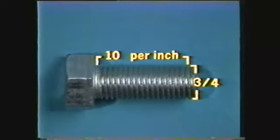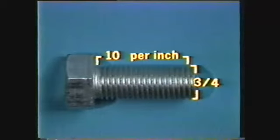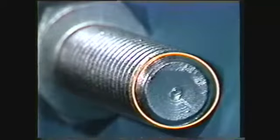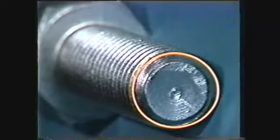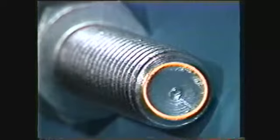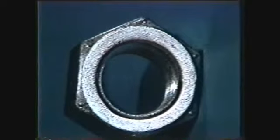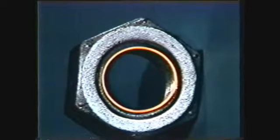A three-quarter ten thread, for example, means that ten threads per inch are cut into stock three-quarters of an inch in diameter. The term threads per inch refers to the number of threads in an inch measured parallel to the axis. The major diameter of a thread is the largest diameter of the threaded portion of a screw or nut, also called the outside diameter. The minor diameter of a thread is the smallest diameter on a screw, sometimes called the root diameter, and also applies to the inside diameter of a nut.